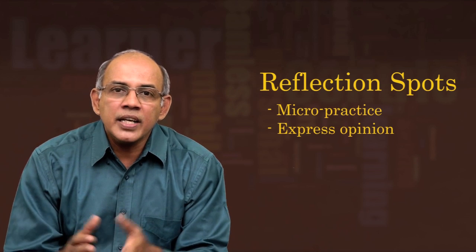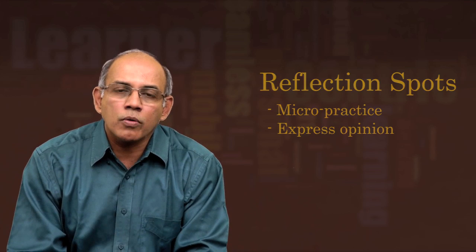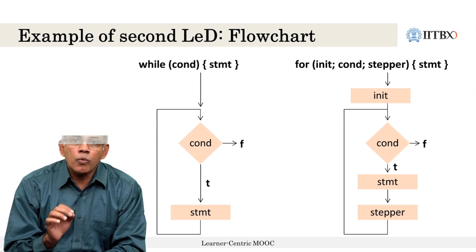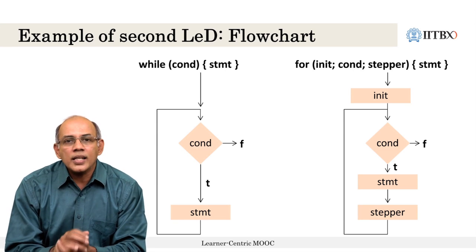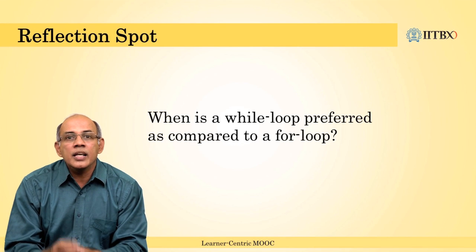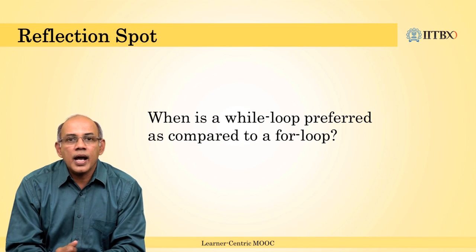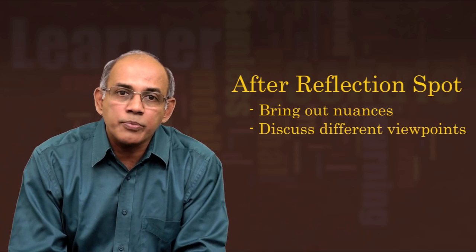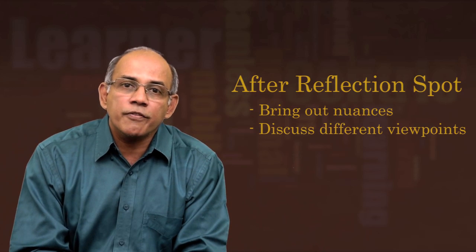For example, if we consider the CS101 topic of comparing a for loop and a while loop, one reflection spot in that LED could be to ask the learner when a while loop is preferred compared to a for loop. Different learners would have different answers, and even though both can be used interchangeably to a large extent, it brings the opportunity for the instructor to bring out the different nuances between these two types of loops in the content that follows the reflection spot.